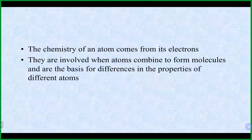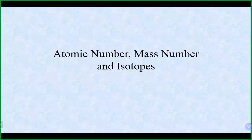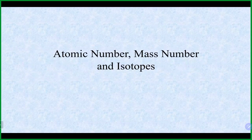Most of the chemistry of atoms comes from electrons. In a chemical reaction, the only thing that happens is we break bonds between atoms and reform bonds — that's basically electrons breaking and making bonds. Now let's talk about the atomic number, the mass number, and isotopes.